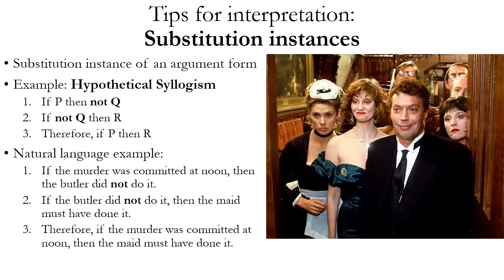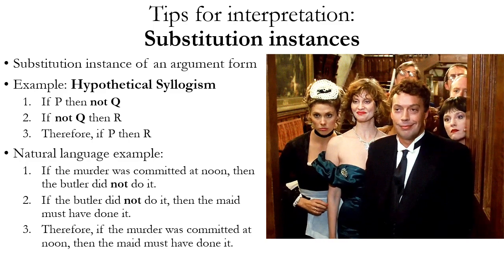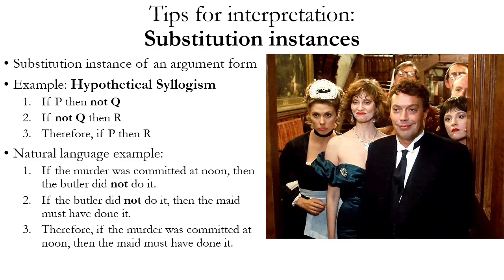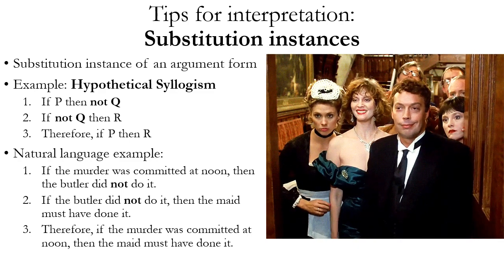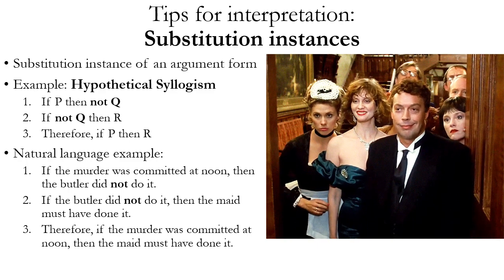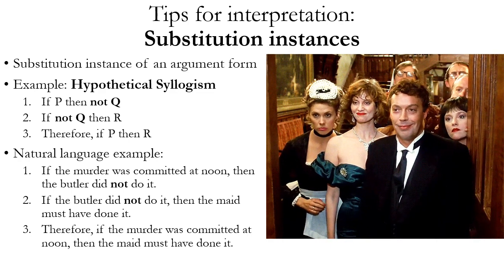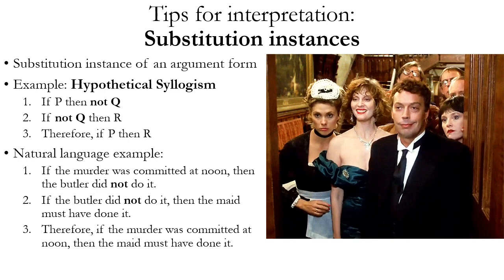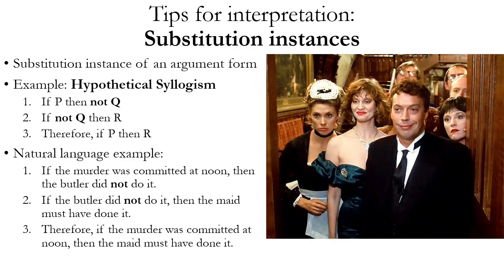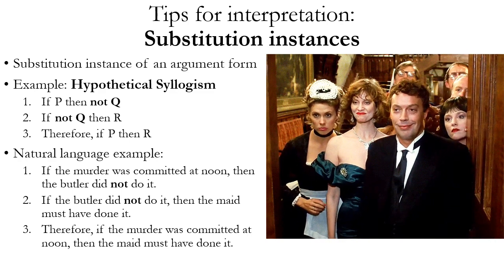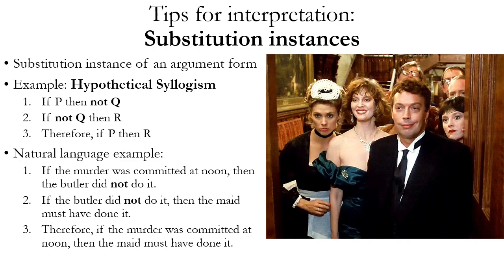So even though we defined hypothetical syllogism as if P then Q, if Q then R, and therefore if P then R, this example — if P then not Q, if not Q then R, therefore if P then R — still fits the overall form of hypothetical syllogism. Instead of the simple proposition Q in the consequent of the first premise and in the antecedent of the second premise, we have the compound proposition not Q. This argument still has the same pattern of operators and the same pattern of propositions. We've just replaced the simple proposition Q with the compound proposition not Q. If we substitute propositions consistently like that, we can retain the argument form. This is still a valid instance of hypothetical syllogism.